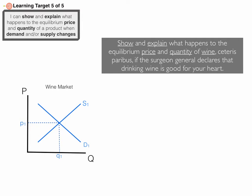The problem says: show and explain what happens to the equilibrium price and quantity of wine, ceteris paribus, if the Surgeon General declares that drinking wine is good for your heart. In these problems, either supply is going to change or demand is going to change. If one thing happens to spur a change, either supply or demand is going to change — never both. Sometimes two things might happen where you have to shift both curves, but if one thing is changing, it's either going to change supply or demand, never both.